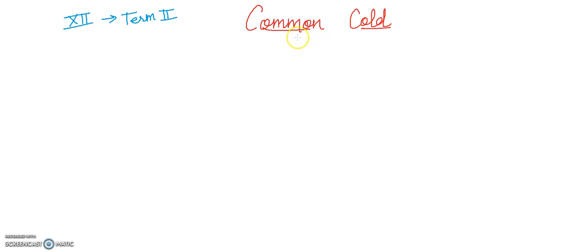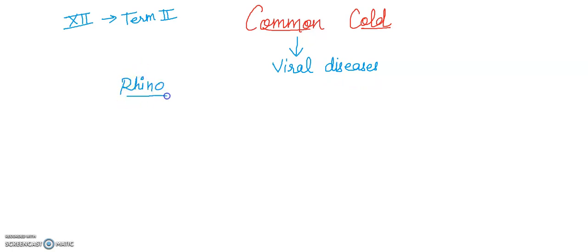What exactly happens in common cold? Basically it is a viral disease. Many viruses cause disease in human beings. Rhinovirus represents a group of viruses which cause one of the most infectious human ailments — the common cold.